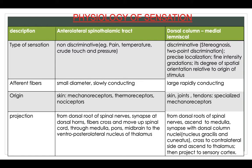In the dorsal column, sensation is discriminative — including stereognosis, two-point discrimination, precise localization, fine intensity gradation, and degree of spatial orientation related to the origin of the stimulus. Regarding afferent fibers, in the anterolateral spinothalamic tract they are small in diameter and slow-conducting, whereas in the dorsal column they are large and rapidly conducting.